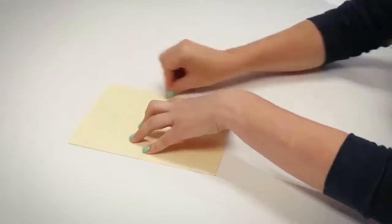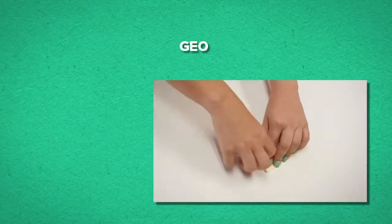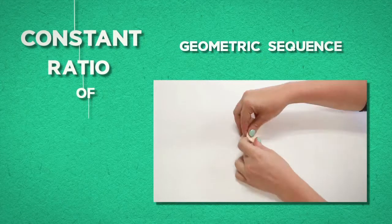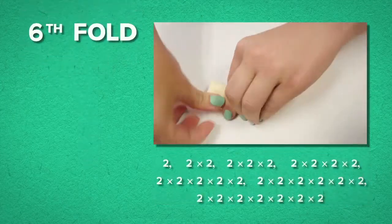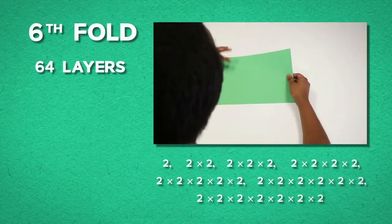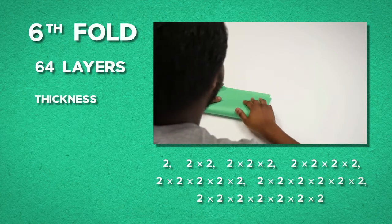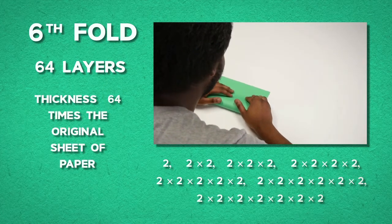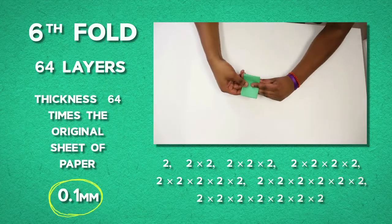As you keep folding the paper, you form a geometric sequence with a constant ratio of 2. So, by the sixth fold, you already have 64 layers with a thickness 64 times the original sheet of paper of 0.1 mm.